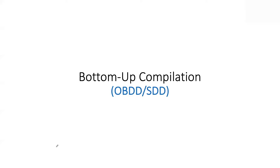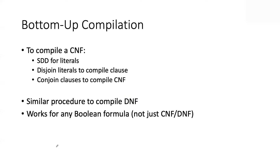There are distinct differences between them, but the basic idea of bottom-up compilation is this: if I want to compile a CNF, which is a conjunction of clauses, I pick a clause and every literal in the clause is trivially compiled into an SDD. To compile the clause into an SDD, I disjoin the literals. Then, with an SDD for every clause, I conjoin the SDDs that correspond to those clauses using the apply operation.